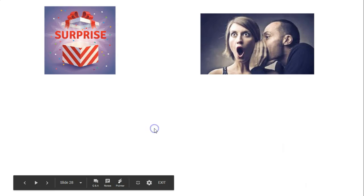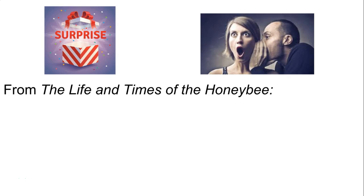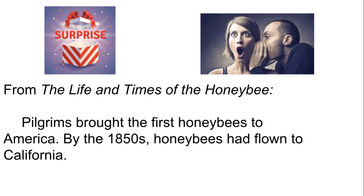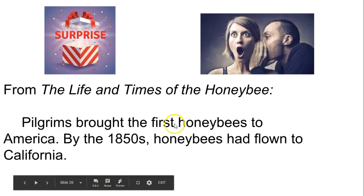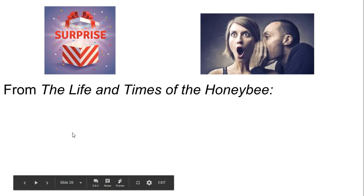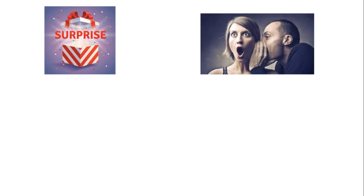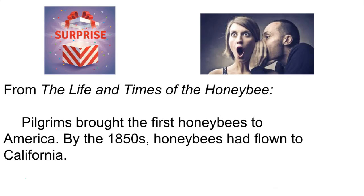Here's an example from a book called The Life and Times of the Honeybee. It says: 'Pilgrims brought the first honeybees to America; by the 1850s, honeybees had flown to California.' My surprise: there were no honeybees in America before the pilgrims brought them, and it took until the 1850s to reach California. That's new information. And then suspiciously — is that really true that they didn't get there till 1850? You can see how this works — make a little note in the margin. I have two more videos, and that's a wrap!